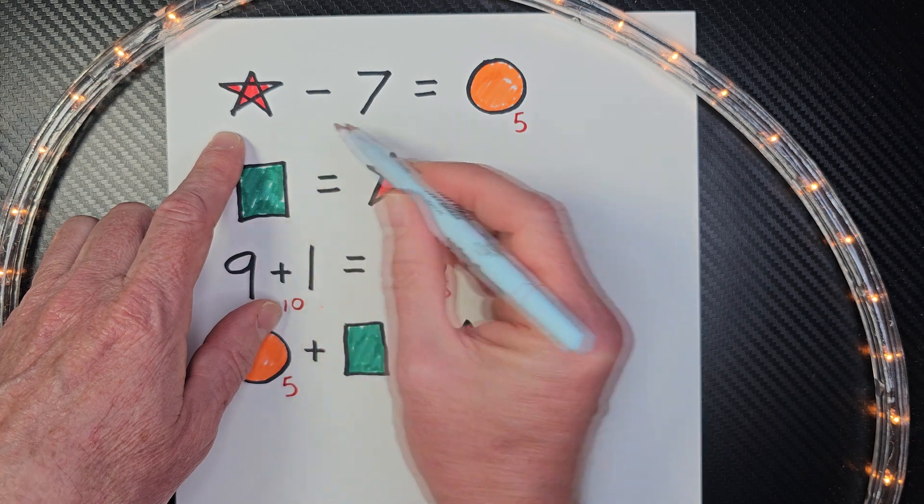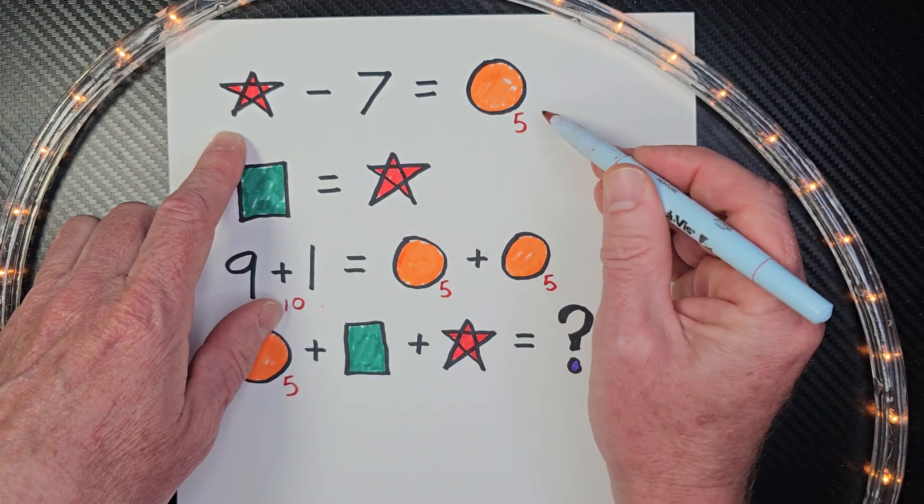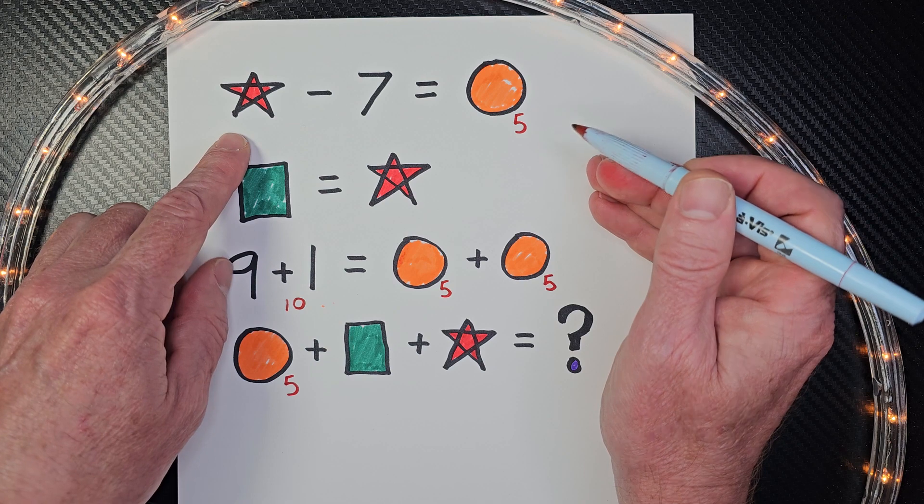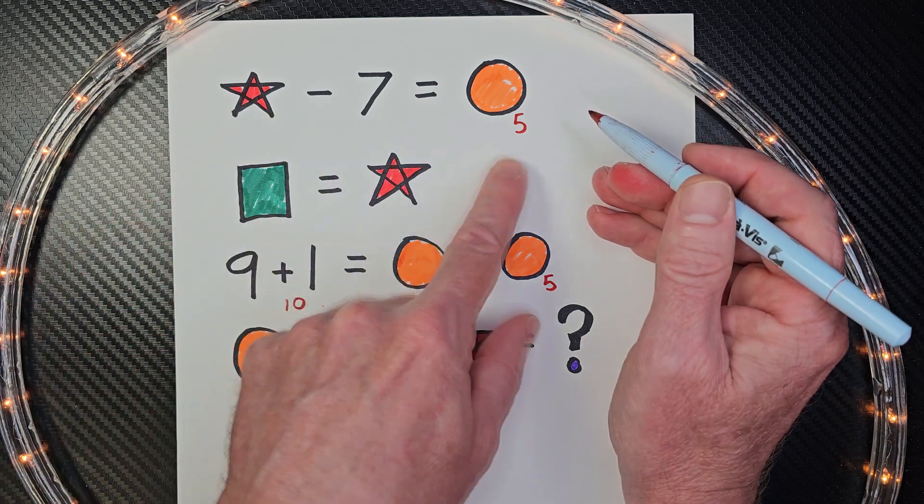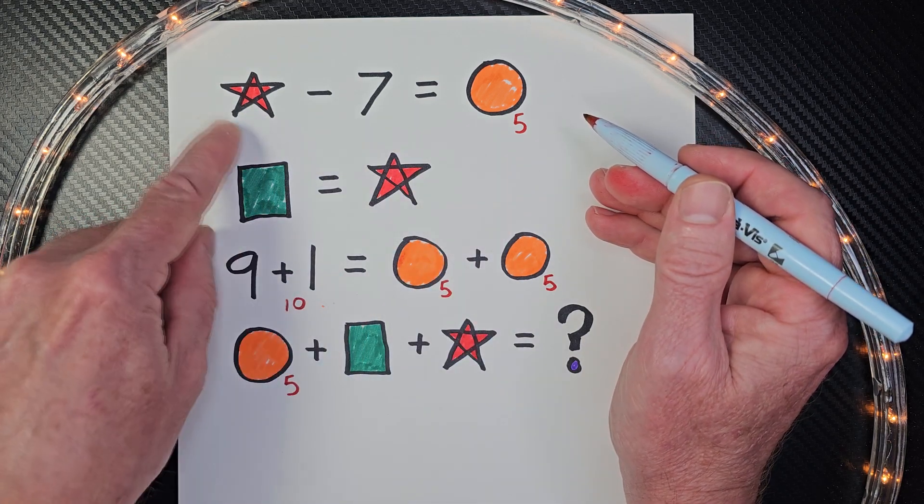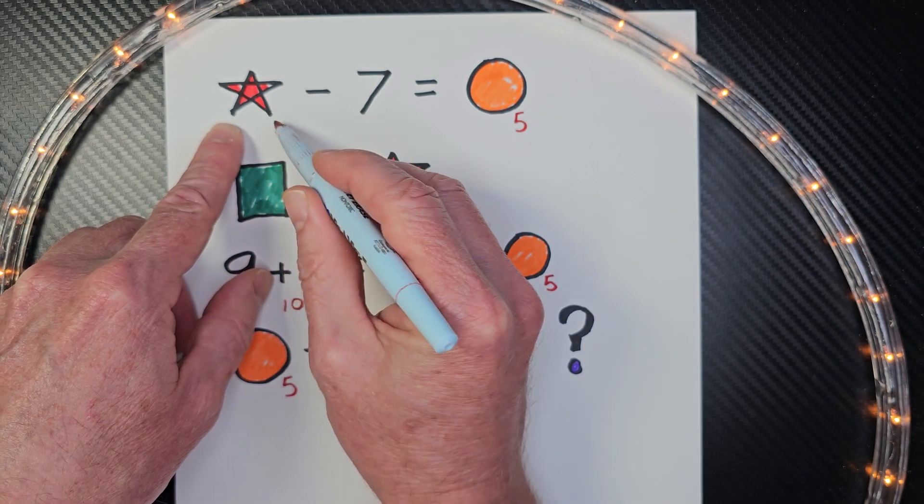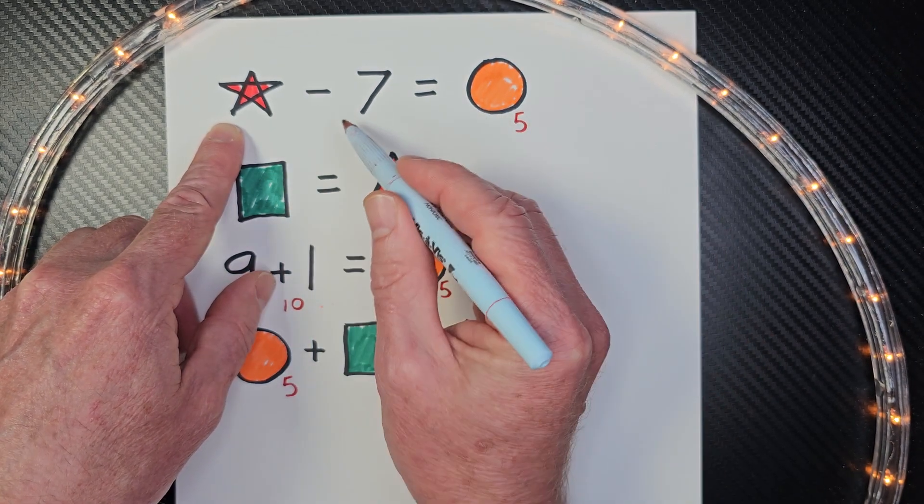Some number minus 7 equals 5. What do you think is the most common mistake that students might put right here? Yeah, they'll put 2 right there and they'll say 2 minus 7 equals 5. But no, it's like saying I have two pieces of candy and you're taking 7 away, so it's not 5.